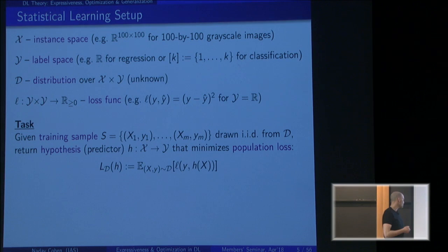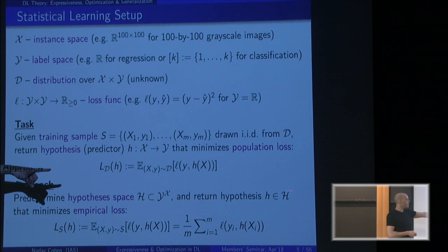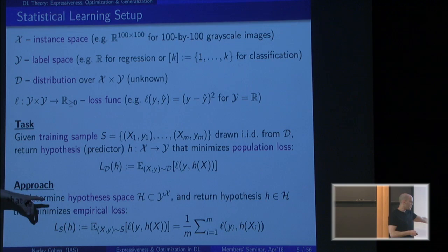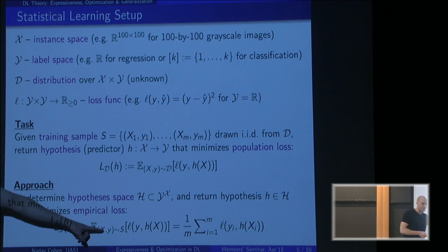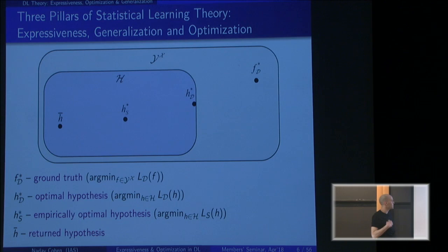The basic statistical learning approach is very simple. We predetermine a set of functions from instances to labels — a hypothesis space — before seeing the training set. Given the training set, we return the member of this space that minimizes the empirical loss. The empirical loss is not the population loss; it's just the average loss over all pairs we are given. Population loss can't be measured because we don't know D.